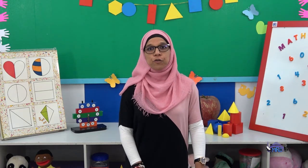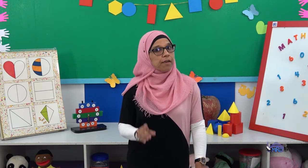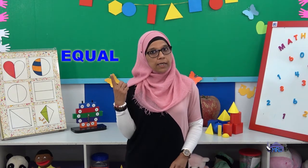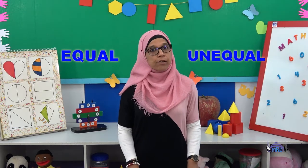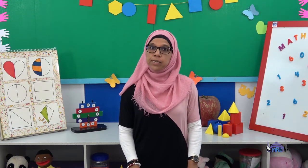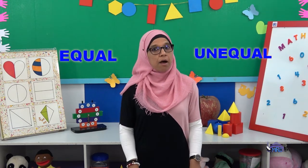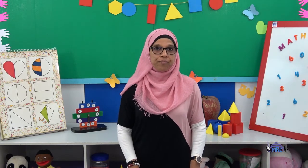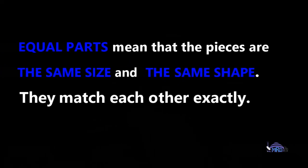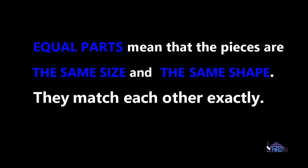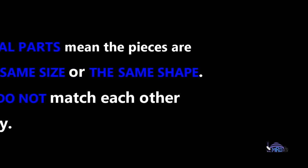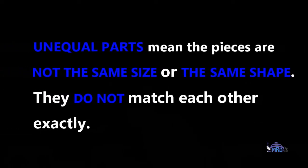We're going to look at a few shapes and objects. I want you to think very carefully. Remember what the words mean — equal and unequal — and try to decide if the objects and shapes I'm showing you are equal or unequal. Let's recap: equal parts mean that the pieces are the same size and the same shape. They match each other exactly. Unequal parts mean the pieces are not the same size or the same shape — they do not match each other exactly.